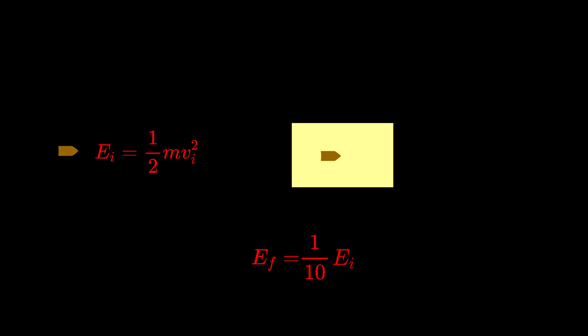So we see that the final energy of the whole object is ten times smaller than the initial kinetic energy of the projectile.